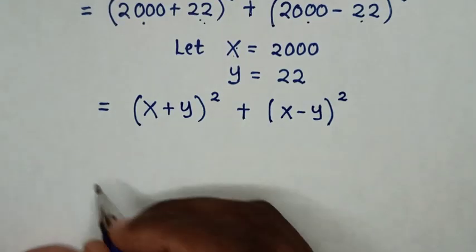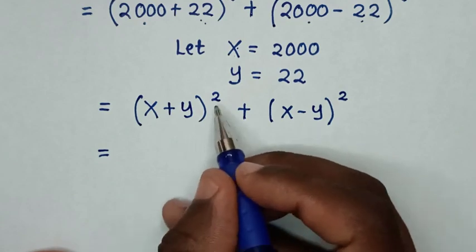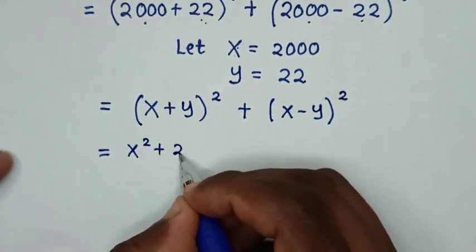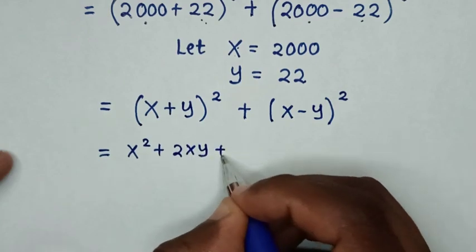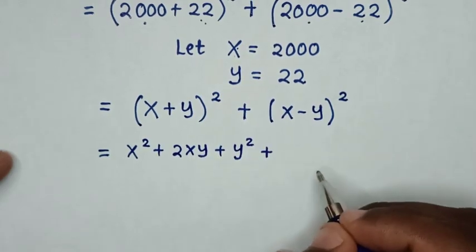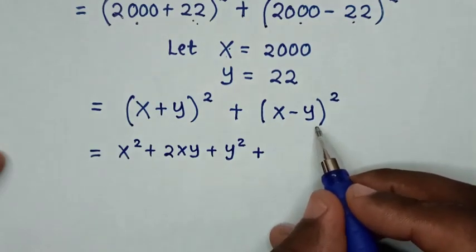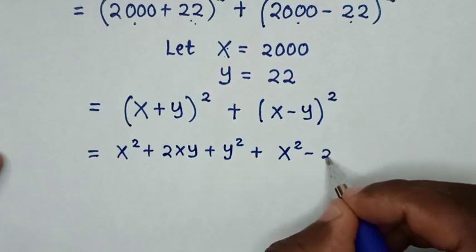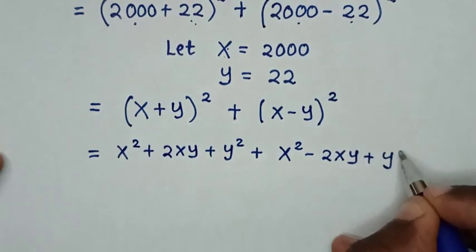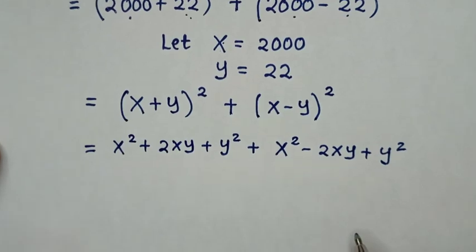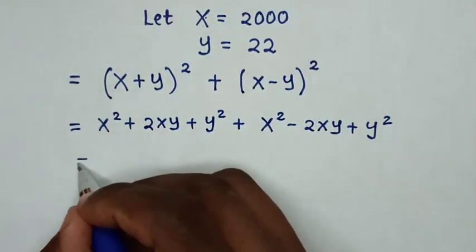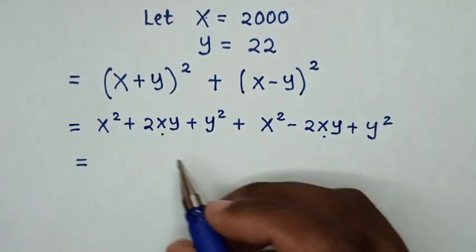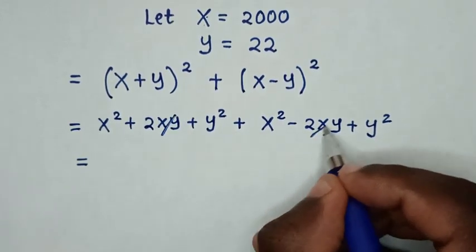Then, in the next step, to expand (x + y) squared: it is x squared plus 2xy plus y squared. Then plus, to expand (x − y) squared: it is x squared minus 2xy plus y squared. Then, +2xy and −2xy cancel out to 0.